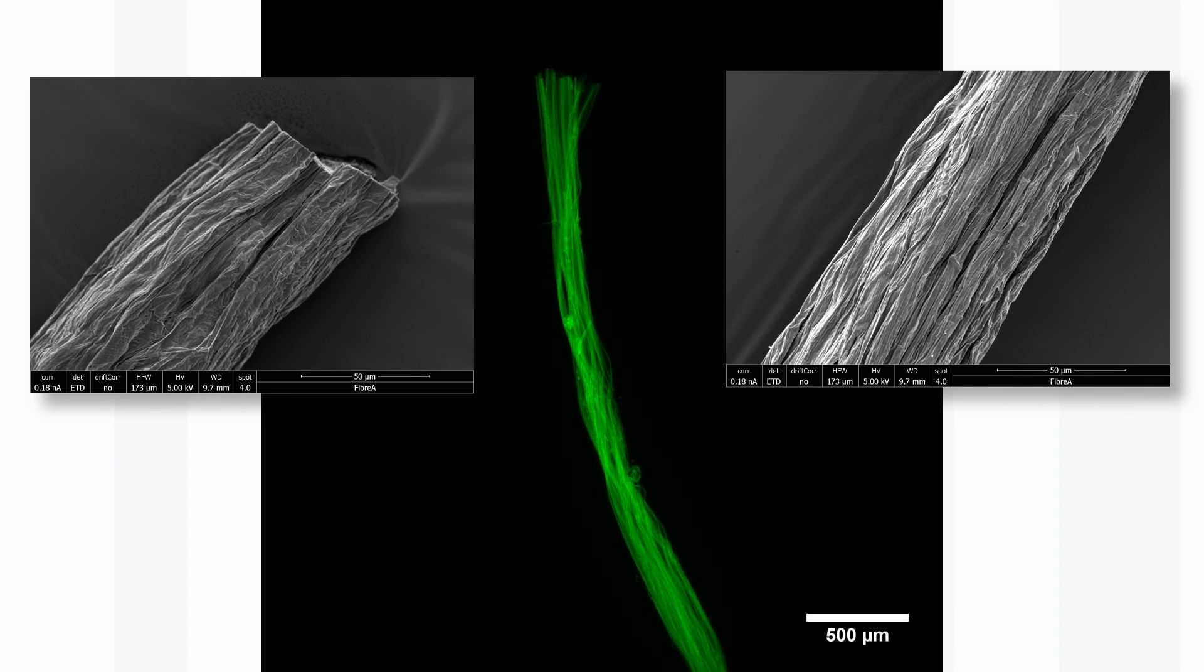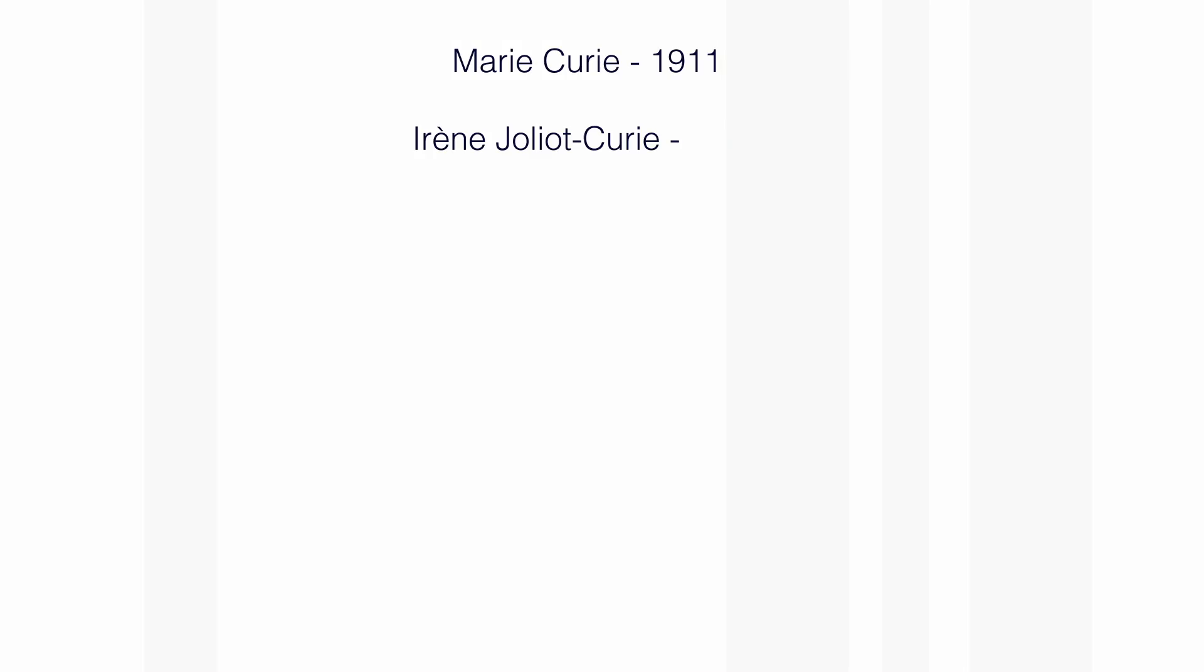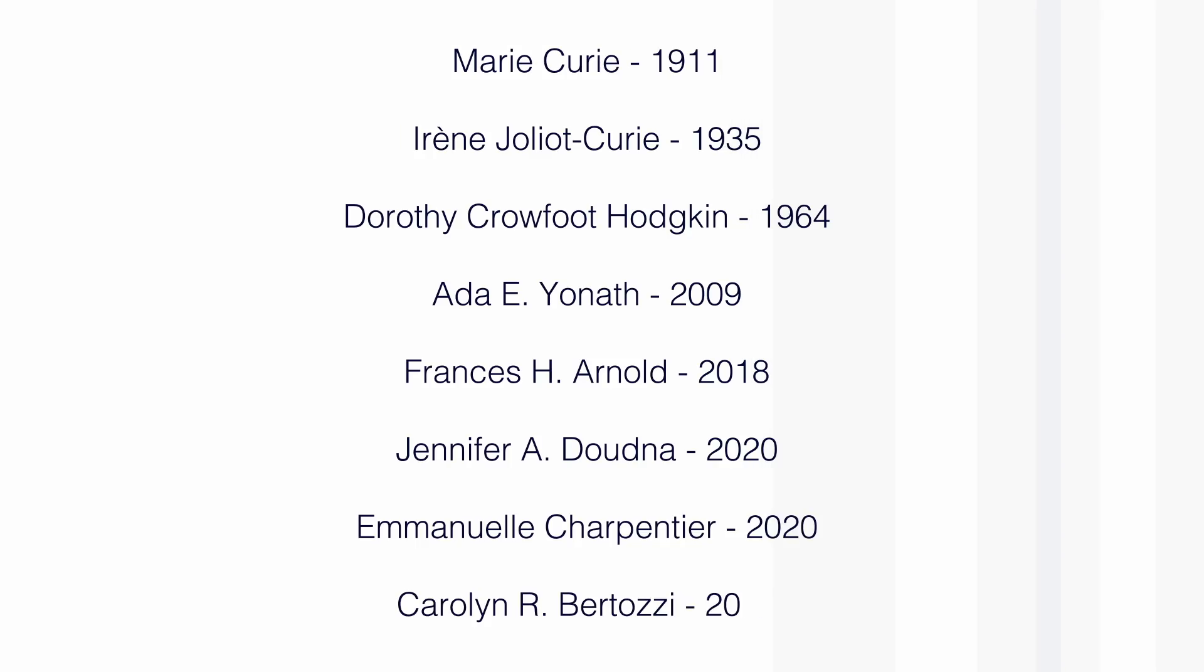Caroline Bertozzi is only the eighth woman to win a Nobel Prize in chemistry. And as far as I'm aware, she's the first member of the LGBT community to win a Nobel Prize in chemistry. This is obviously very important for representation. She explains herself that as an undergraduate and PhD student, she faced ridicule and sometimes even exclusion because of sexism and homophobia. So it's really important to have a strong role model to inspire and support the community and raise awareness for some of these issues.